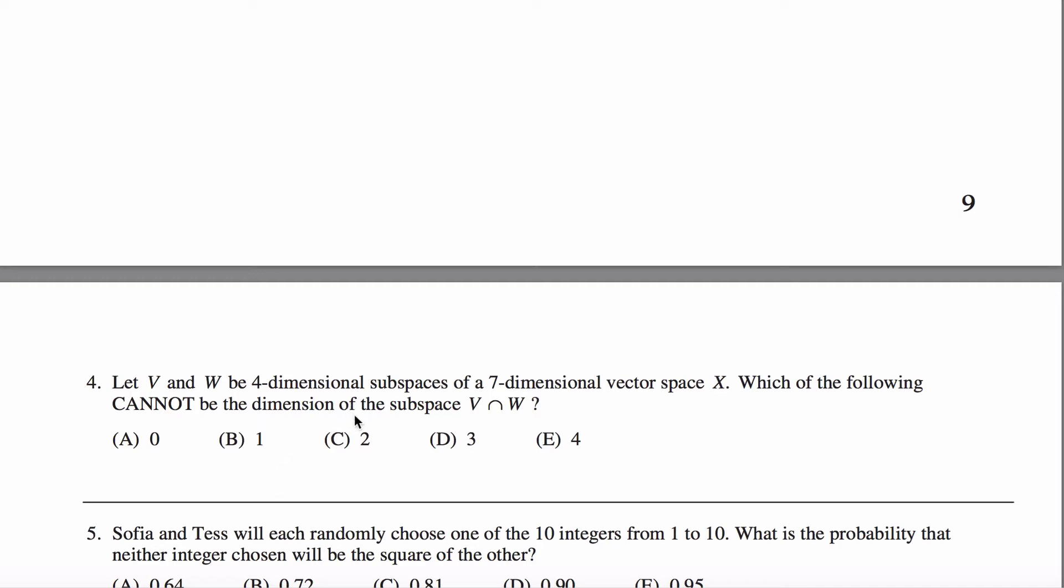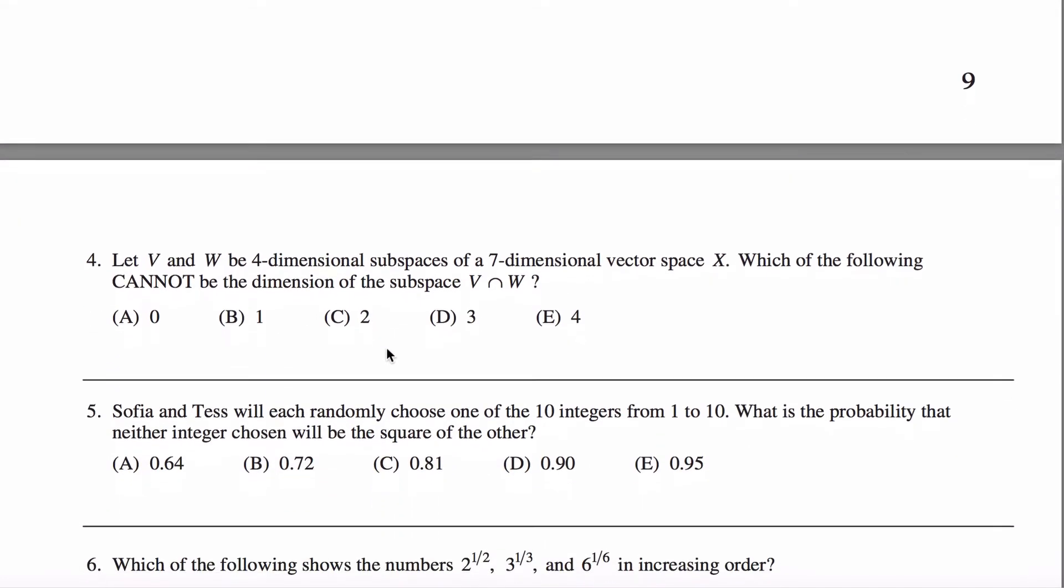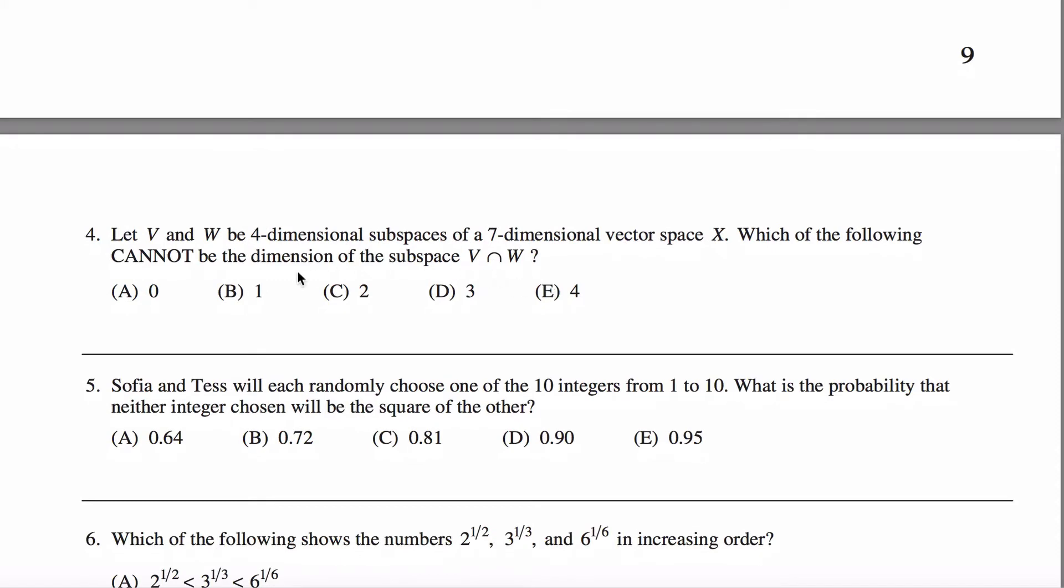All right, here's problem four of the math subject GRE test. We're talking about subspaces. We have V and W are both four-dimensional subspaces of a seven-dimensional vector space, which of the following cannot be the dimension of their intersection.